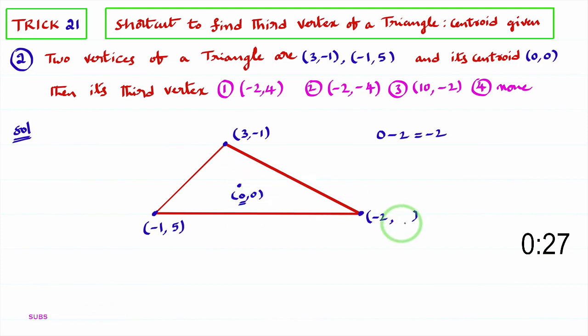Now, to find the y coordinate of third vertex, you observe y coordinate of the centroid, multiply with 3. 3 into 0 is 0 minus sum of y coordinates, minus 1 plus 5 is 4. So 0 minus 4 is minus 4.